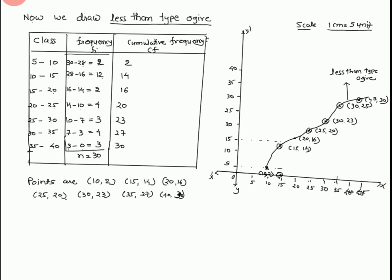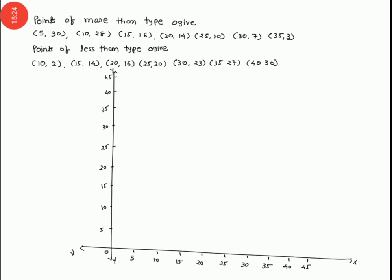We take the intersection point of the two ogives. By dropping a perpendicular from the intersection point to the x-axis, we can obtain the median. Now we draw both types of ogives — the more than type and the less than type — together on one graph.